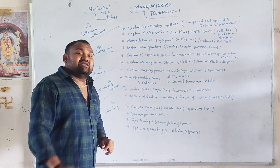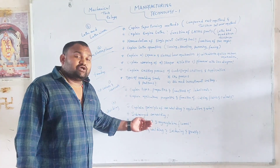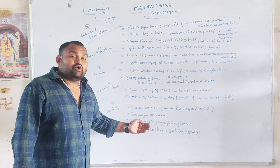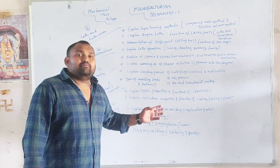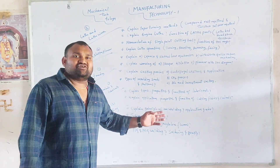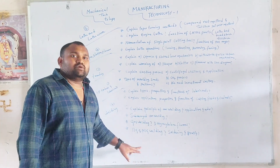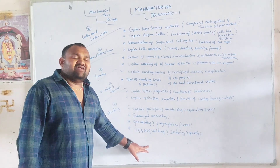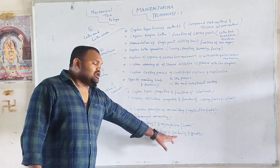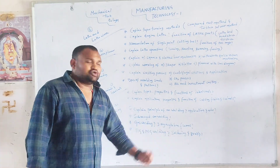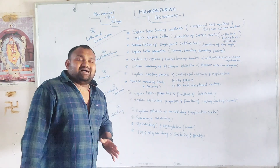Next, welding is very important. Coming to gas welding — what is gas welding? There are three types of flame: oxidizing flame, neutral flame, and carburizing flame. That's very important. Also, what is TIG welding and what is MIG welding — tungsten inert gas welding and metal inert gas welding. These are the most important questions.